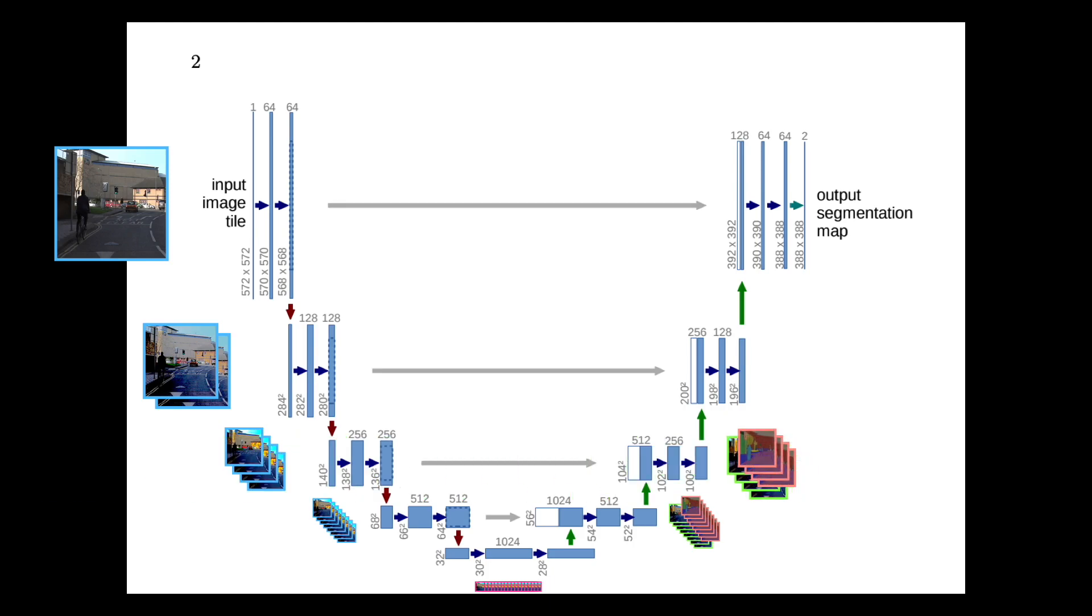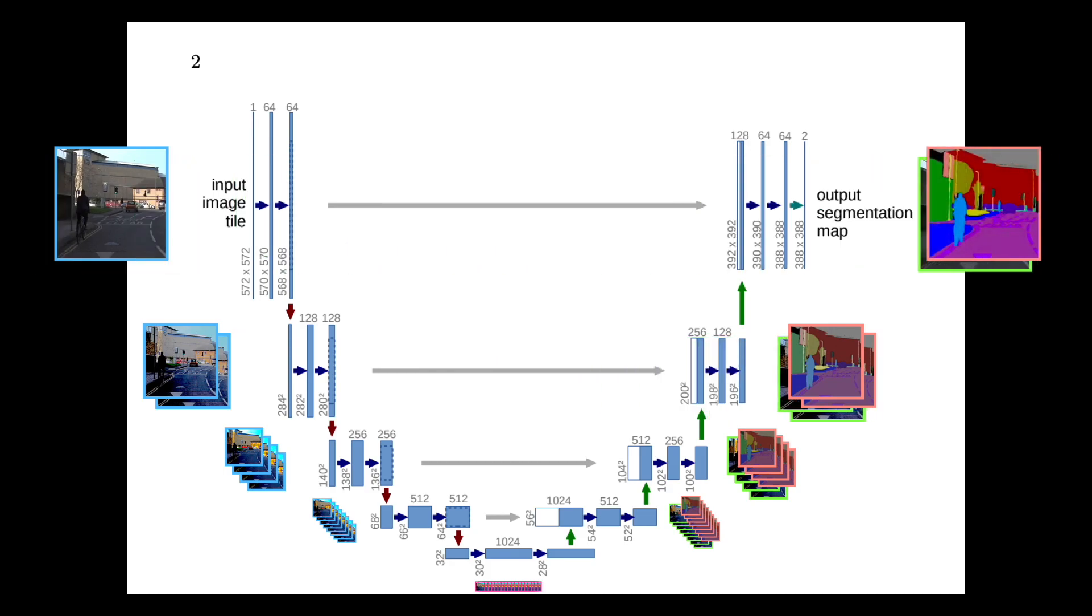This pattern of upsampling, passing through convolutional layers, and concatenating the features repeats all the way to the final output layer. And there you have it. That's the overview of the UNet Machine Learning Model Architecture.